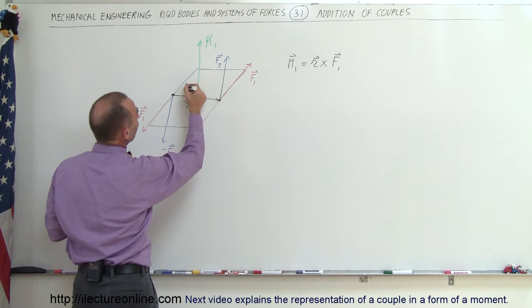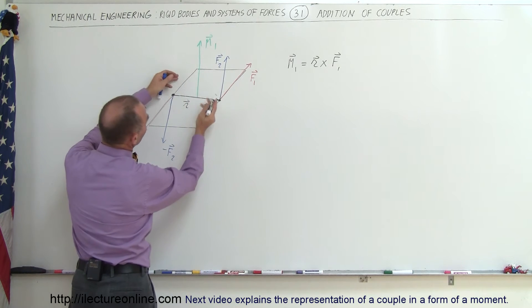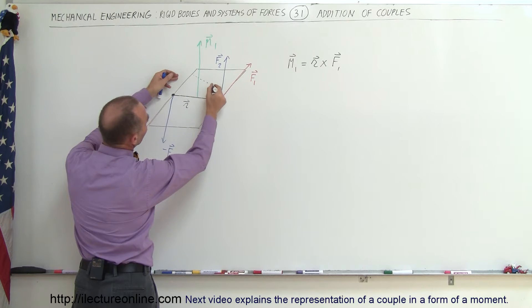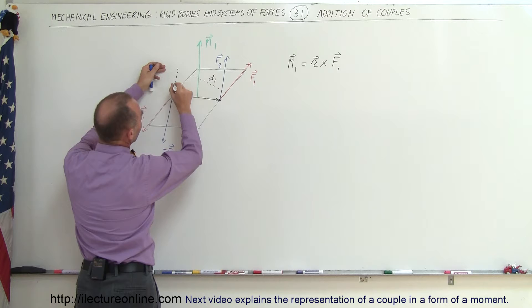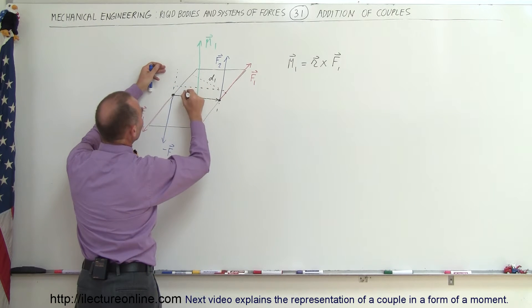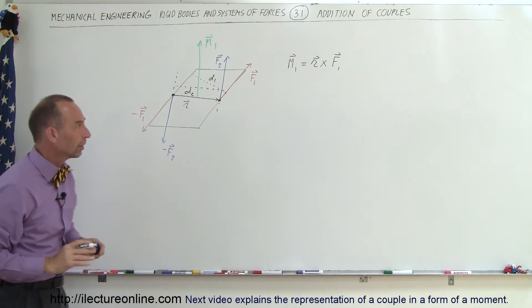So this here would be the distance. So if we draw a line perpendicular here, this here would be the distance D1. And this here, if we draw a line this way, a line this way, this here would be the distance D2. You can see that D1 and D2 will not be equal to one another.